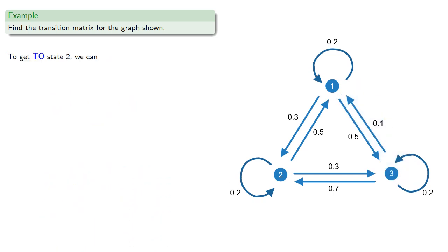Likewise, to get to state 2, we could have come from 1 with probability 0.3, the loop takes us from 2 back to itself with probability 0.2, or we could have come from 3 with probability 0.7.